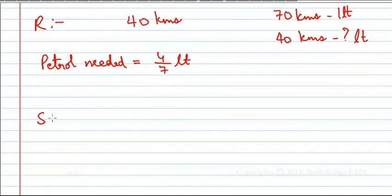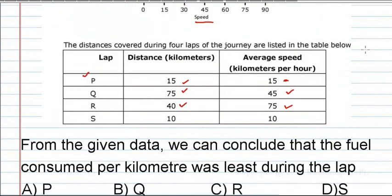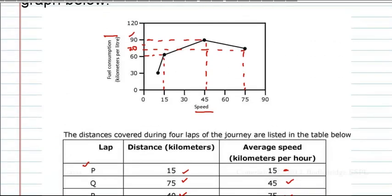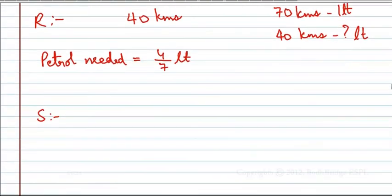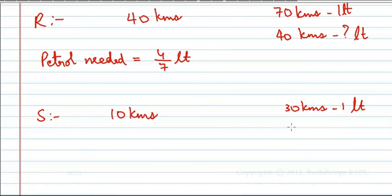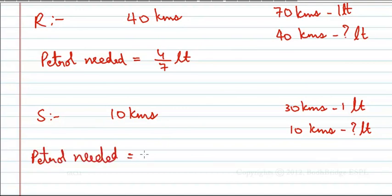For lap S, the motorcycle travels 10 kilometers at a speed of 10 kilometers per hour. At 10 kilometers per hour, the graph shows it needs 30 kilometers per liter. So for 10 kilometers, the petrol needed is 10 divided by 30, which equals one-third liter.